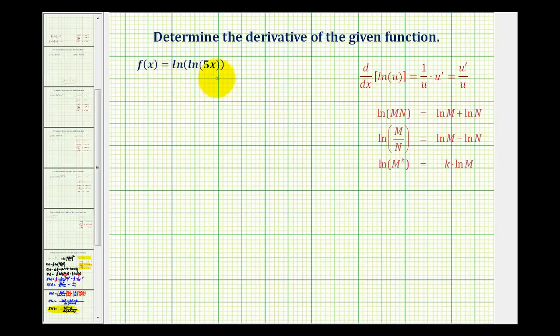We want to determine the derivative of the given function. This one looks a little funny because we have f of x equals natural log of natural log five x, so we do have a composite function, so we'll have to apply the chain rule.